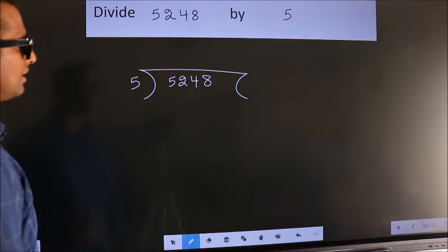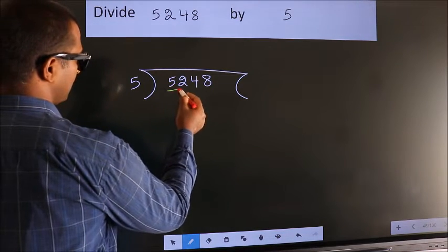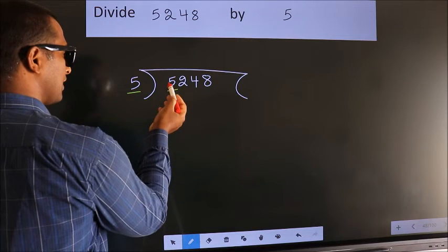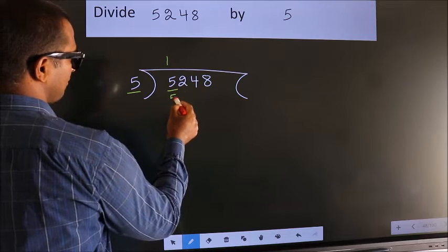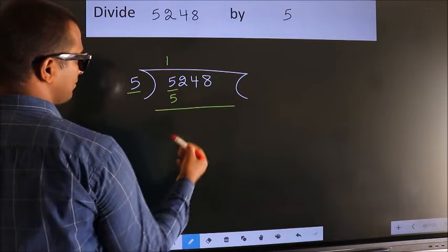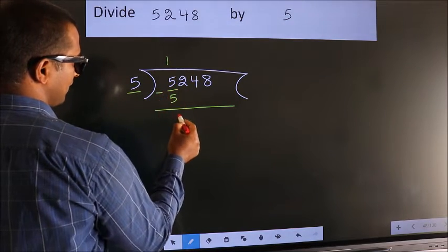Next. Here we have 5. Here 5. When do we get 5? In the 5 table: 5 once is 5. Now we should subtract. We get 0.